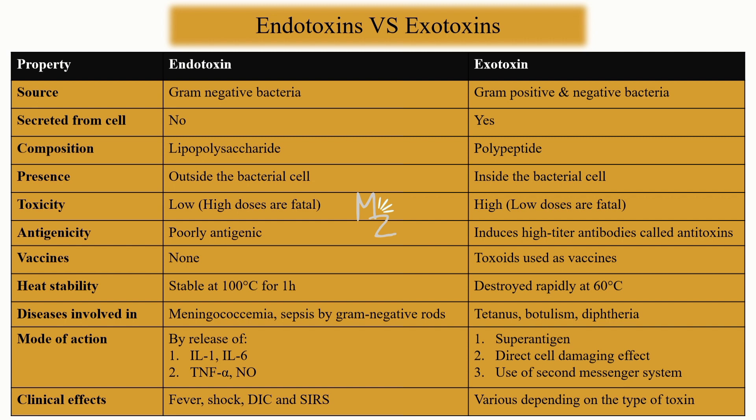Endotoxins are present outside the bacterial cells, because the lipopolysaccharide is found in the cell membrane. Exotoxins are present inside the bacterial cells. Regarding toxicity: the toxicity of endotoxin is low, which is why high doses are fatal. The toxicity of exotoxins is high, so their low doses are fatal.